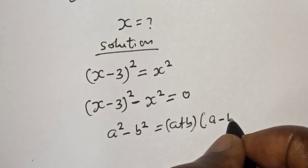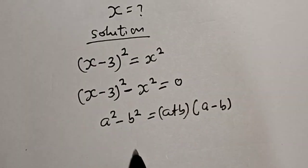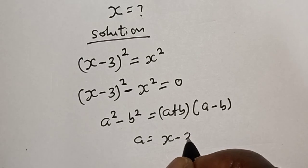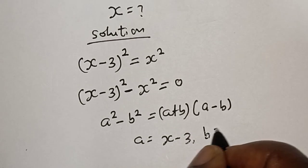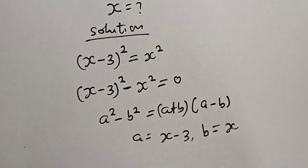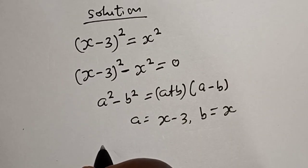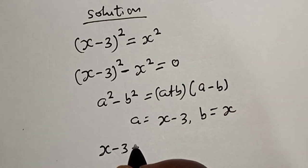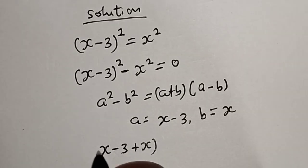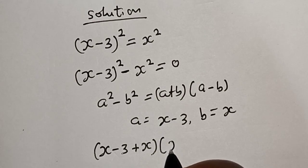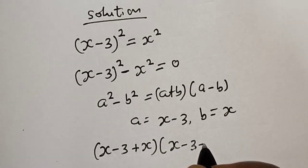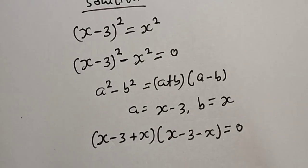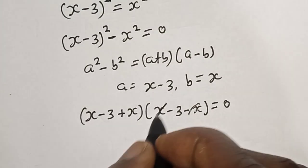So a is equal to x minus 3, b is equal to x. This is x minus 3 plus x multiplied by x minus 3 minus x is equal to 0. So this will cancel, this we have x plus x.